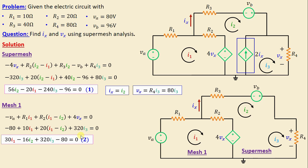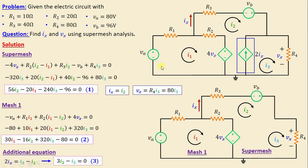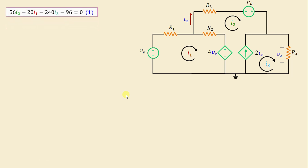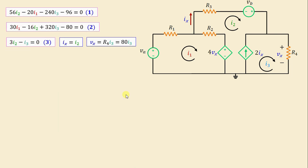We currently have two equations with three unknowns, so we require one additional equation. Focusing on the current-controlled current source 2ix, we write: 2ix = i2 − i3, which gives 3·i2 − i3 = 0, replacing ix with i2. This is Equation 3. From Equation 3, we express i3 = 3·i2.